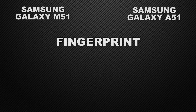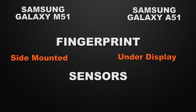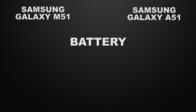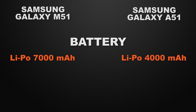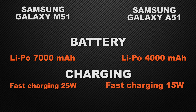For features, the M51 has a side-mounted fingerprint scanner and the A51 has an under-display fingerprint scanner, so A51 wins. Both devices have accelerometer, gyro, proximity, and compass sensors — a tie. For battery, the M51 has a 7000 mAh battery and the A51 has 4000 mAh, so M51 is the winner. For charging speed, the M51 has 25W fast charging and the A51 has 15W, so M51 wins because it charges faster.